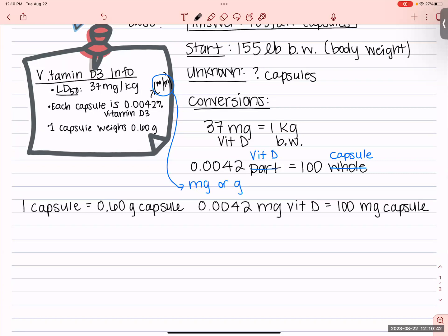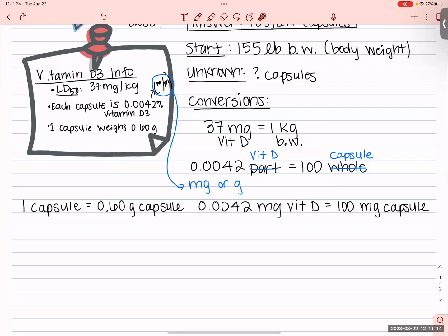So those are the conversions given to us. Let's figure out if we need any additional conversions. I like to put my finger on my starting unit and see if I can trace through all my conversions without lifting my finger and arrive at my unknown unit. Starting with pounds of body weight — I see a problem: I have no pounds of body weight anywhere in the conversions. So let's start from capsules instead, or work backward from the unknown.